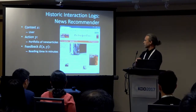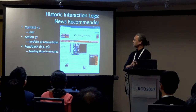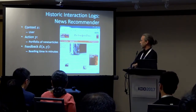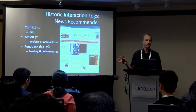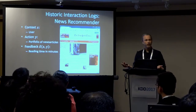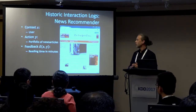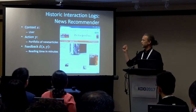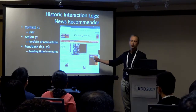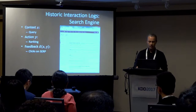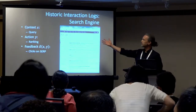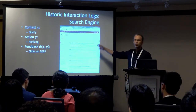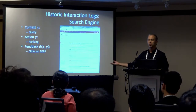The same thing applies to a personalized newspaper: a user comes in with certain attributes as context, the current system puts together a front page of current articles as the action, and the feedback we want to maximize is reading time — but we only observe feedback for the one action taken. For a search engine, the context X is a query, the action Y is presenting a particular ranking, and the feedback is derived from clicks on that ranking — but we don't get to see what would have happened with a different ranking.